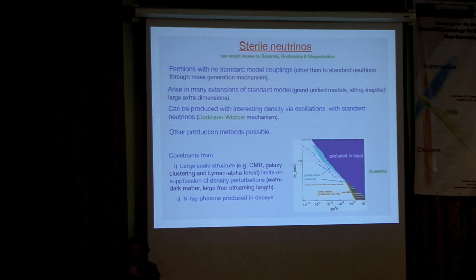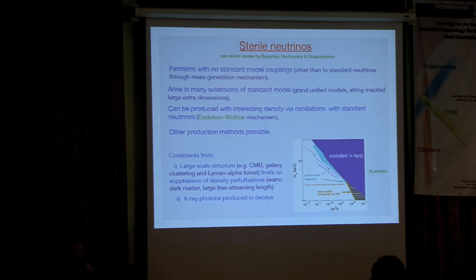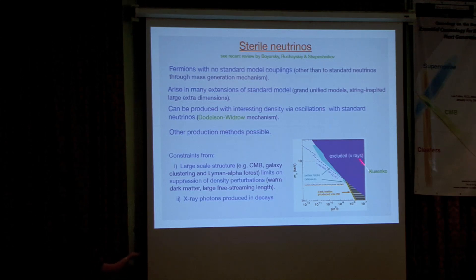Briefly on sterile neutrinos: these are fermions with no standard model couplings apart from the ability to oscillate with standard neutrinos. They arise in various extensions of the standard model, in particular the seesaw mechanism for explaining neutrino masses, and can be produced in the early universe via oscillations. There are constraints from large-scale structure, because being warm they would free-stream and suppress power on scales where we know structures exist, and they can decay producing X-rays, allowing constraints in terms of sterile neutrino mass and mixing angle. There's an allowed range but it's being squeezed by data — they are a viable candidate but increasingly constrained.